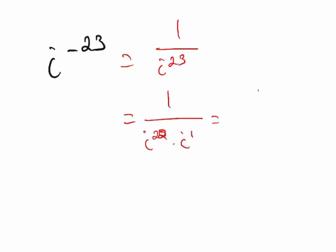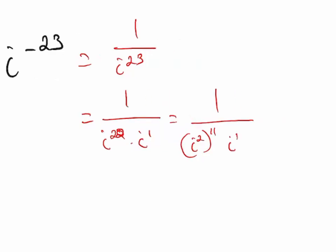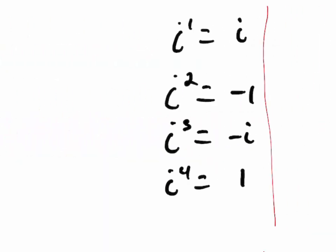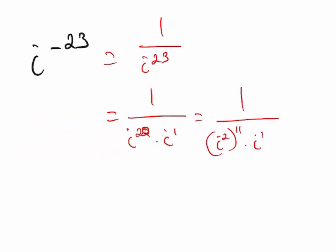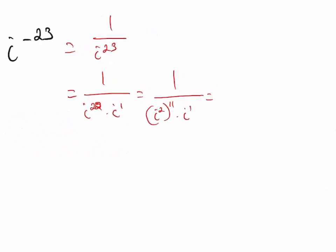I'm going to split up the 22 as i squared raised to the 11th power, then times i to the 1st power. I know that i to the 1st power is just i, so I'll rewrite that as i. And since i squared is negative 1, that becomes negative 1 to the 11th power times i.